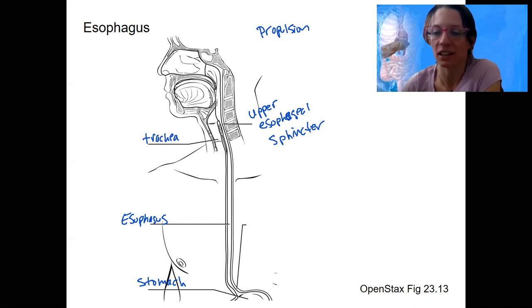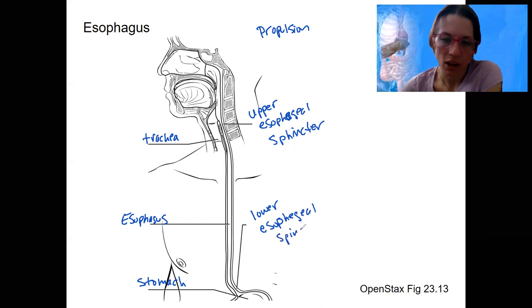We have lots of sphincters in the digestive system. This sphincter down here is in between the esophagus and the stomach. It has a name that also makes sense. It's called the lower esophageal sphincter, also can be called the cardiac sphincter. So these two sphincters are going to help us control food passage.